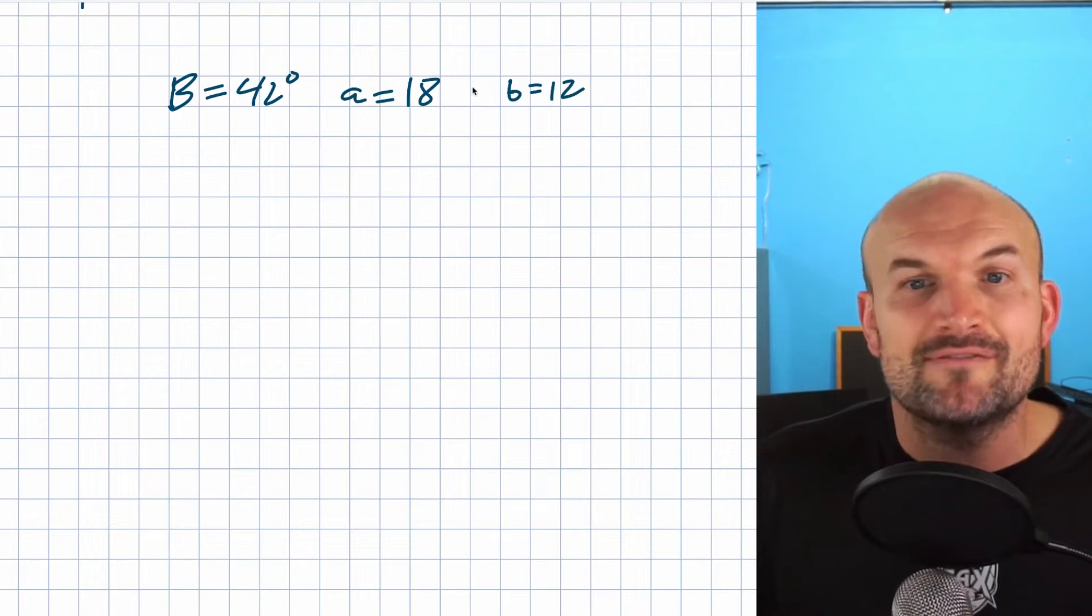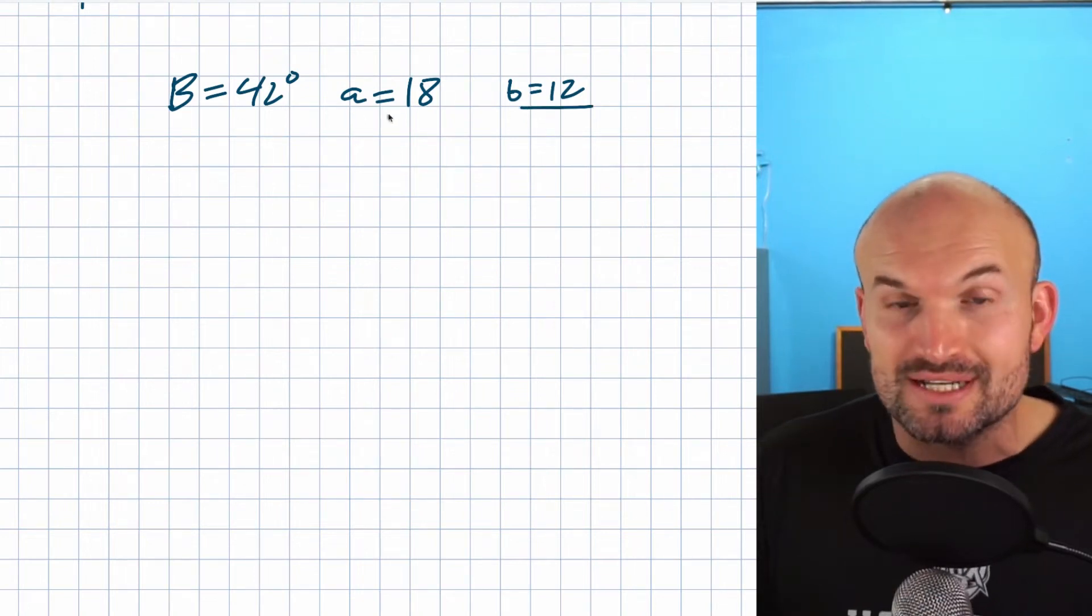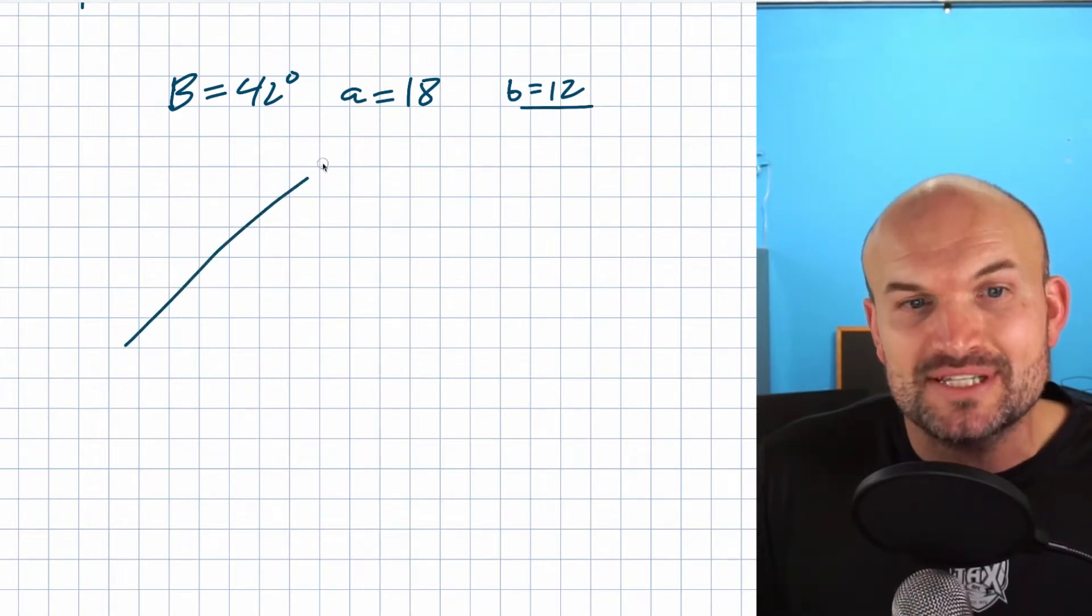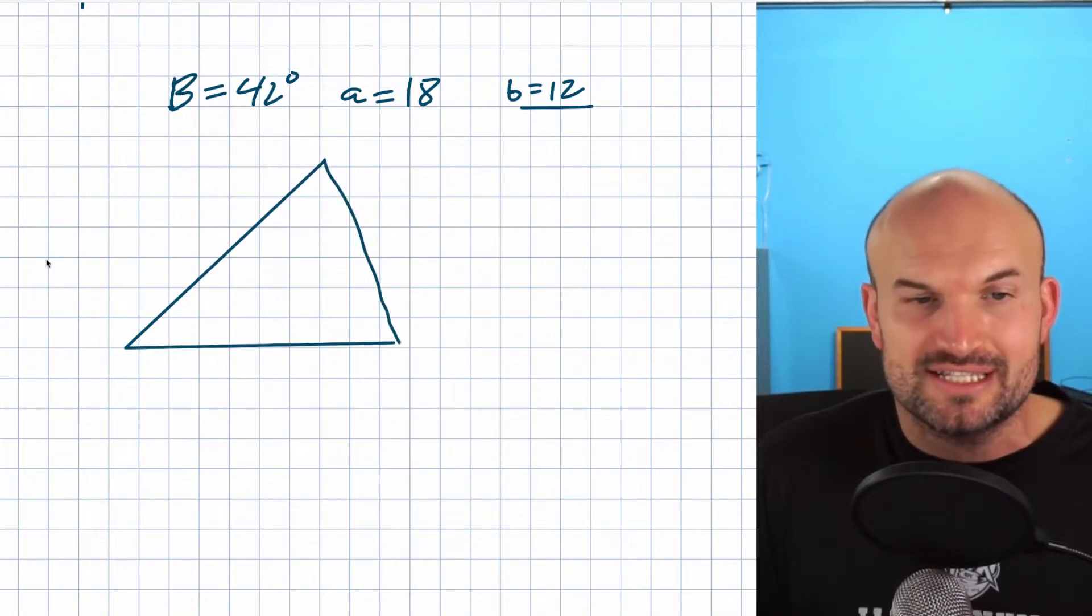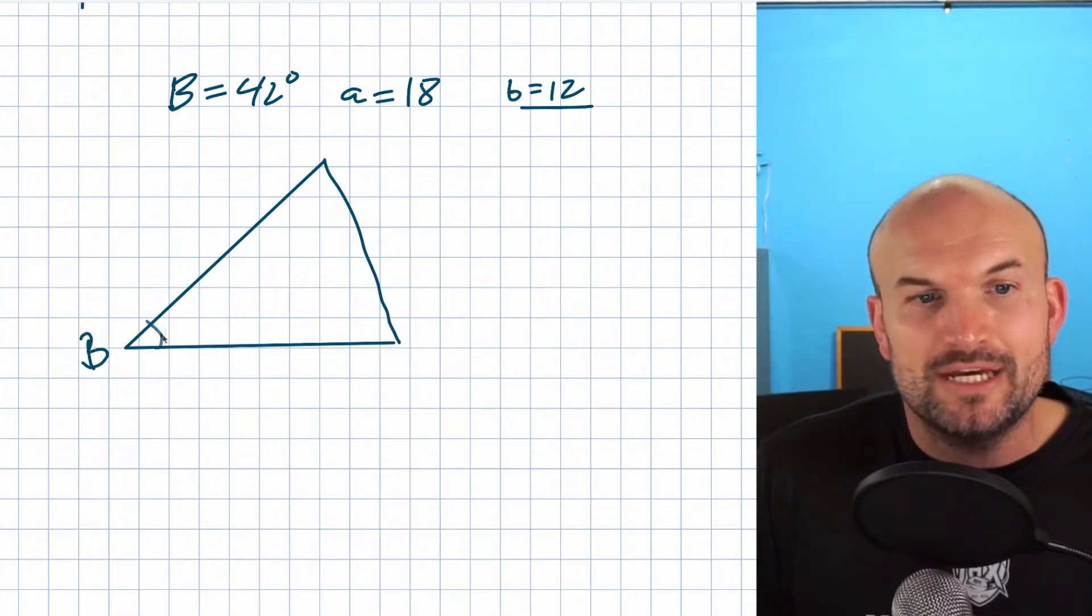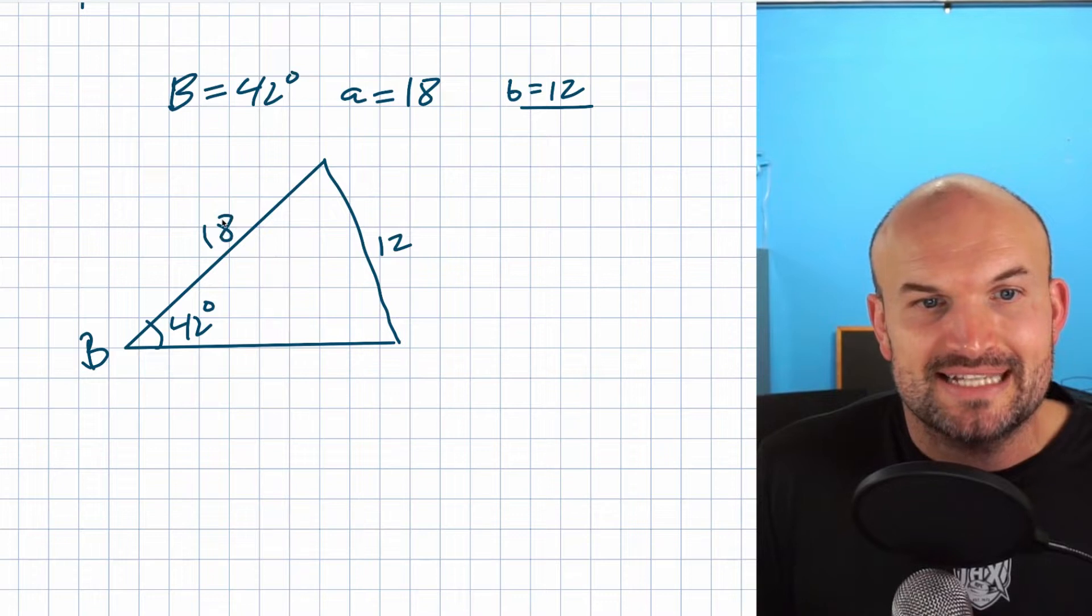What about in this case, when we have our opposing side is not as short as the 18? I'm still going to want to draw a sketch. I always like to have this just in the same example, I'll put B over here, that's going to be 42 degrees, that's a 12, and that's an 18.